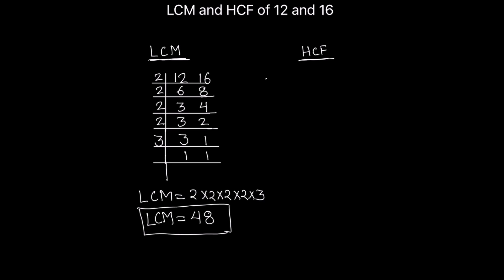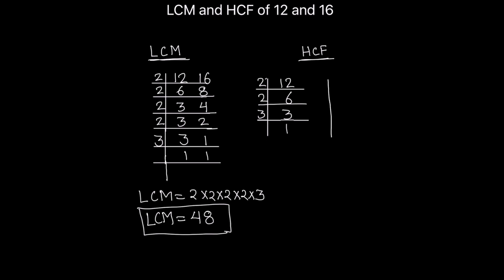To find the HCF we find the prime factors of both numbers separately. For 12: 2 times 6 is 12, then 2 times 3 is 6, and 3 times 1 is 3. For 16: 2 times 8 is 16, then 2 times 4 is 8, then 2 times 2 is 4, and 2 times 1 is 2. Both numbers are fully divided.